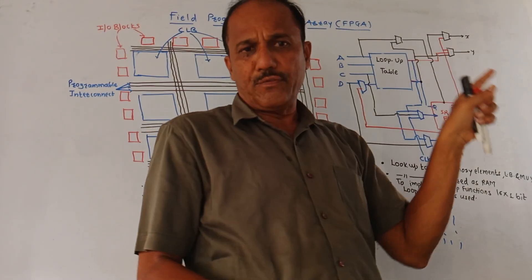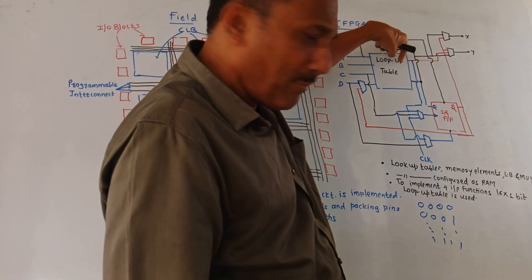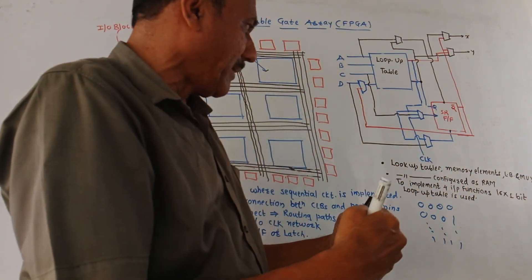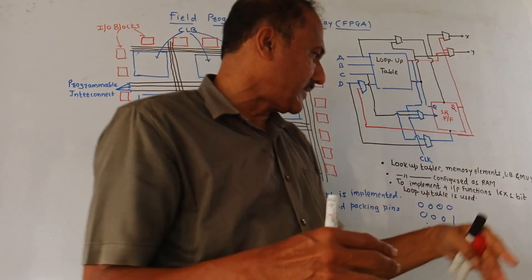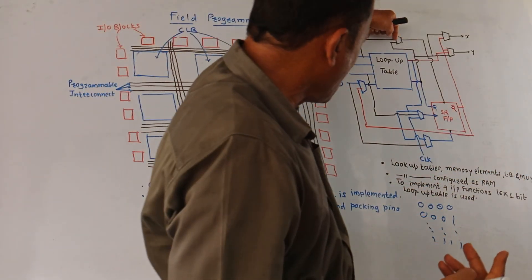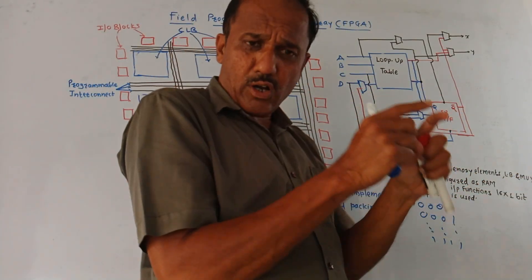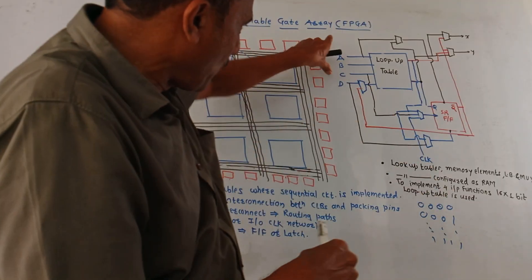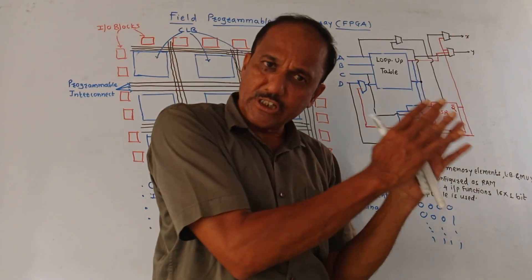This is the Block Diagram of Configuration Logic Blocks, that is CLB. It consists of different elements like a Lookup Table. We need to design a Truth Table, so this is the Lookup Table. It also consists of Memory Elements — here you can see an SR Flip-Flop acting as a Memory Element to store the data. It consists of different Logical Blocks and a Mux, that is Multiplexer. These small boxes are the Multiplexer boxes. So if you want to implement a logical circuitry having 4 inputs — A, B, C, D — we need to write the Truth Table accordingly.